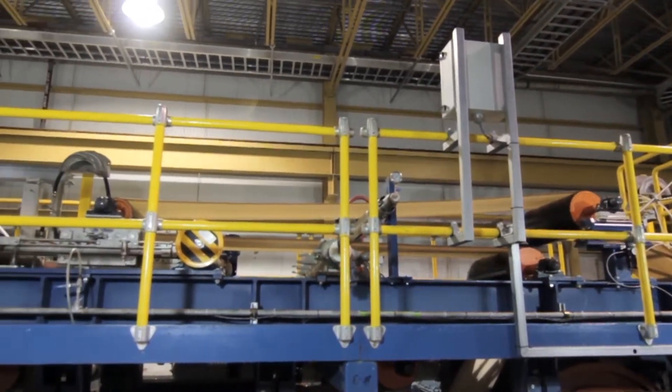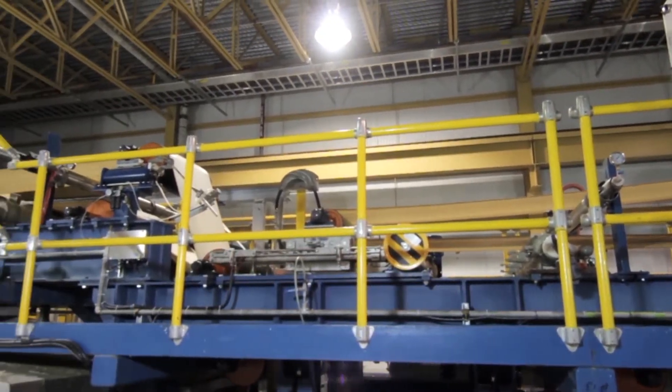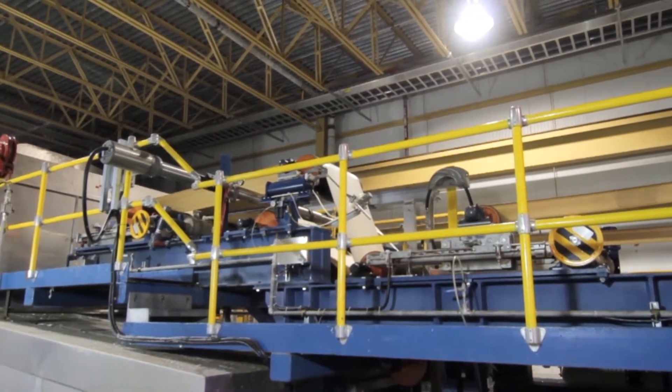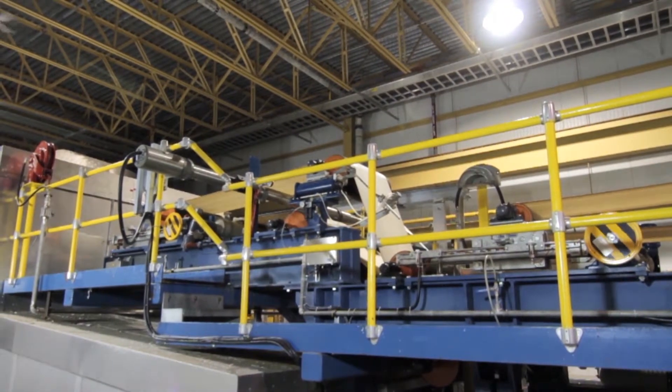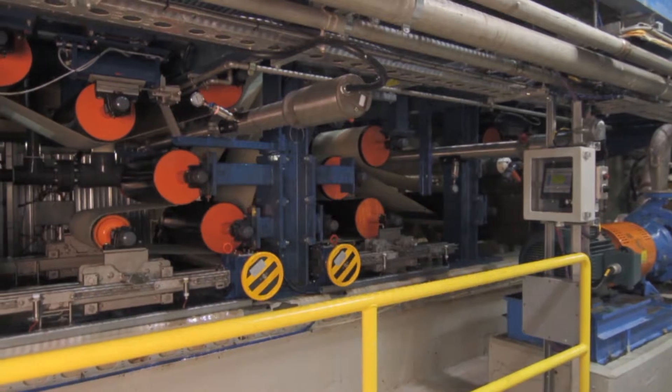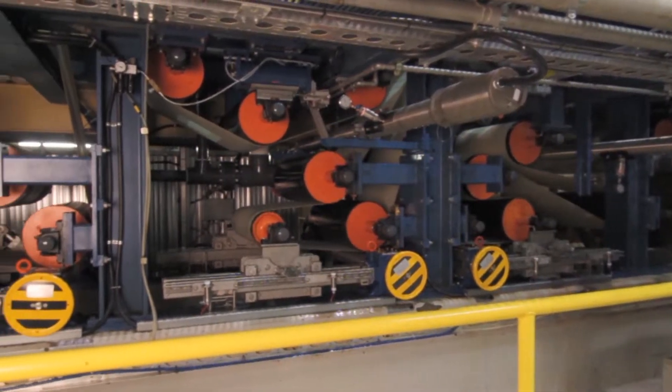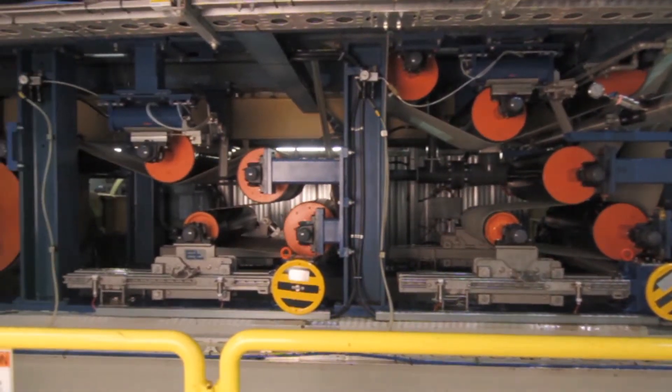Paper machine clothing plays a decisive role in the paper production process. To ensure a constantly high quality of the final product, the tension and position of the felts and wires must be continuously monitored and controlled.